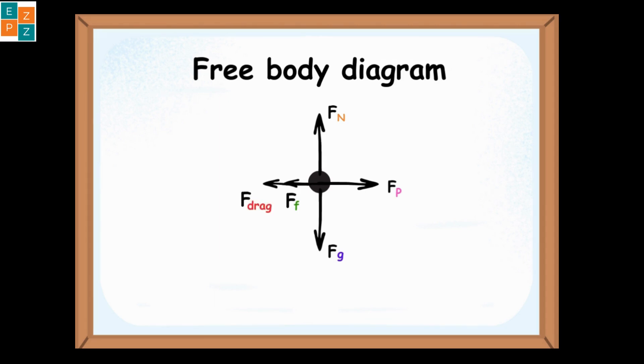The free body diagrams give a clear idea of the direction in which the object will move. In this case, the object will move towards the right because the upward and downward forces cancel out each other and the applied force is more than the sum of the forces of friction and air resistance.